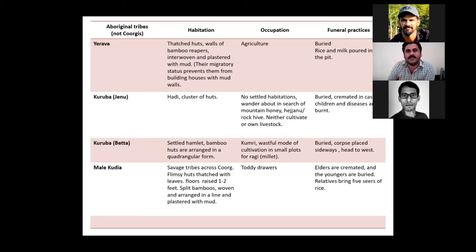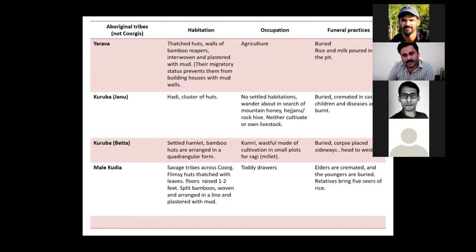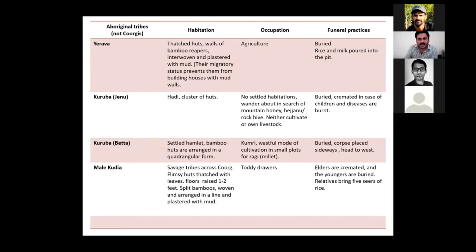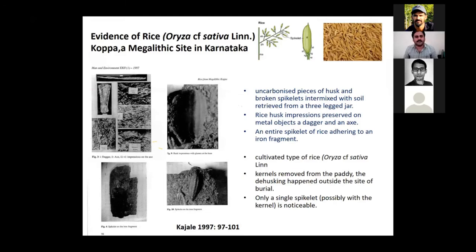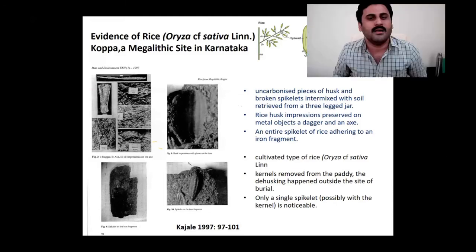Coming to the tribes and caste communities in Coorg — particularly the tribal communities — they are Arawa, Kuruba (classified into Jenu Kuruba and Beta Kuruba), and Malekorea. What is very important for archaeologists to study in this ethnographic parallel is their funeral practices and agriculture. The Arawa bury their dead along with rice and milk poured into the pit. Kurubas bury cremated remains in the case of children and bury their dead adults. In terms of occupation, they have been more pastoralist and hunter-gatherers. The Jenu Kuruba community erects dolmens similar to those of the Iron Age, and rice has been a staple crop found in the burials and remains a major contribution in this region.